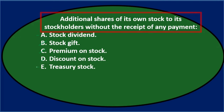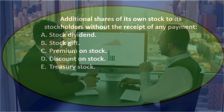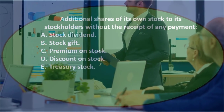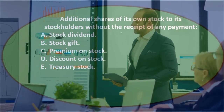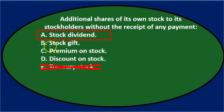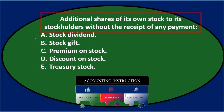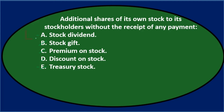Going through it again: additional shares of its own stock to stockholders without the receipt of any payment is either A, stock dividend, or E, treasury stock. The corporation is giving something to its shareholders, which sounds like a dividend — giving something of value instead of cash, giving more ownership of the corporation. Treasury stock represents when a company buys back its own stock. So the final answer is A, stock dividend.